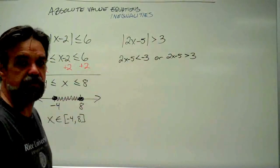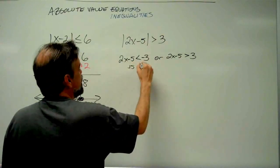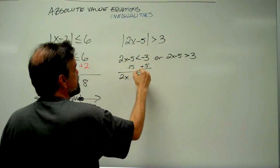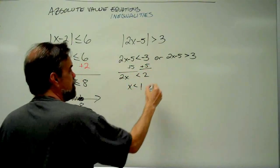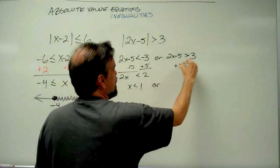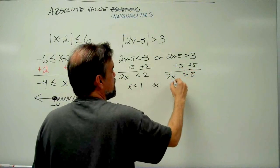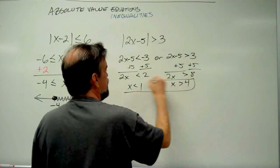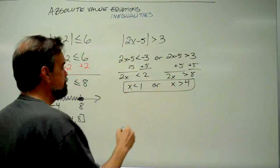Now we just have two linear inequalities — we can solve these. Adding 5 to both sides of the first: 2x is less than 2, so x is less than 1. Or, adding 5 to both sides of the second: 2x is greater than 8, so x is greater than 4. That's our answer: x is less than 1, or greater than 4.